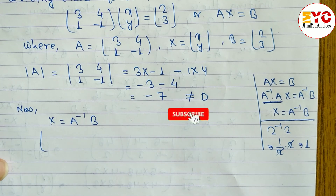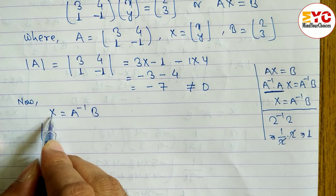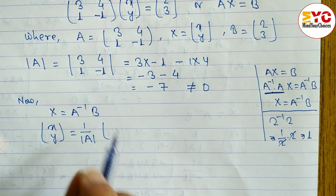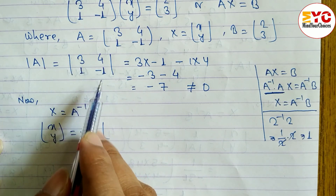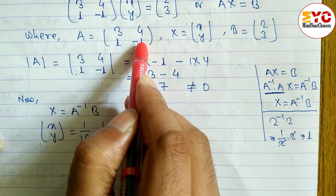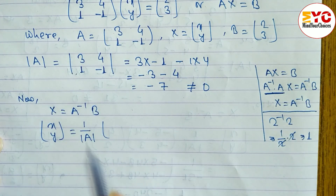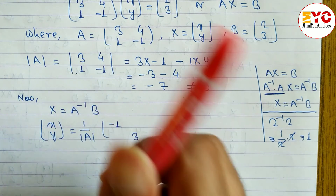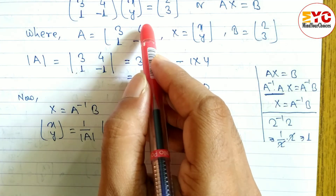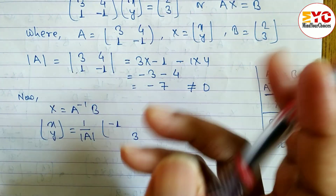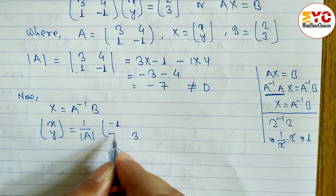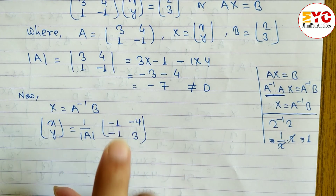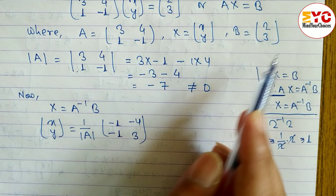Now we compute X = A⁻¹B. A inverse equals 1 over det(A) times the adjugate matrix. For a 2×2 matrix, we interchange the main diagonal elements (3 and −1 swap positions), and change the signs of the off-diagonal elements (4 becomes −4, 1 becomes −1). So A⁻¹ = (1/−7) × [[−1, −4], [−1, 3]]. B is [2, 3], so we write det(A) = −7.